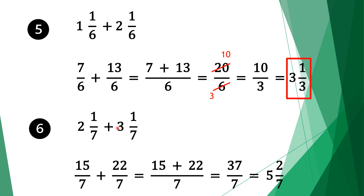For the second fraction: 7 times 3 is 21, plus 1 is 22. Bring the denominator 7. Now we have normal adding fractions with the same denominators. We take the common factor of 7. 7 divided by 7 is 1, 1 times 15 is 15. Move along the plus sign. Do the same for the second fraction: 7 divided by 7 is 1, 1 times 22 is 22. We add 15 and 22 which is 37, and bring the 7. We can't simplify further. Since it's an improper fraction, we write it as a mixed fraction: our solution is 5 and 2 sevenths.